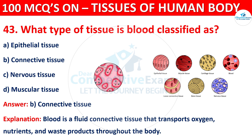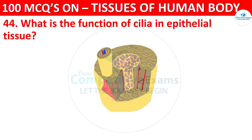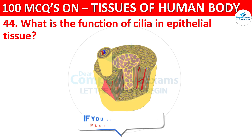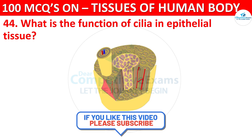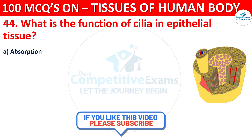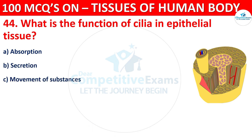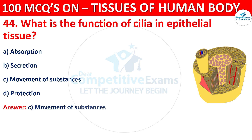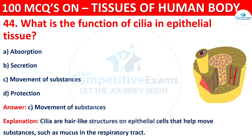Question number 44. What is the function of cilia in epithelial tissue? Options are Absorption, Secretion, Movement of Substances, or Protection. The correct answer is C, that is Movement of Substances. Cilia are hair-like structures on epithelial cells that help move substances such as mucus in the respiratory tract.